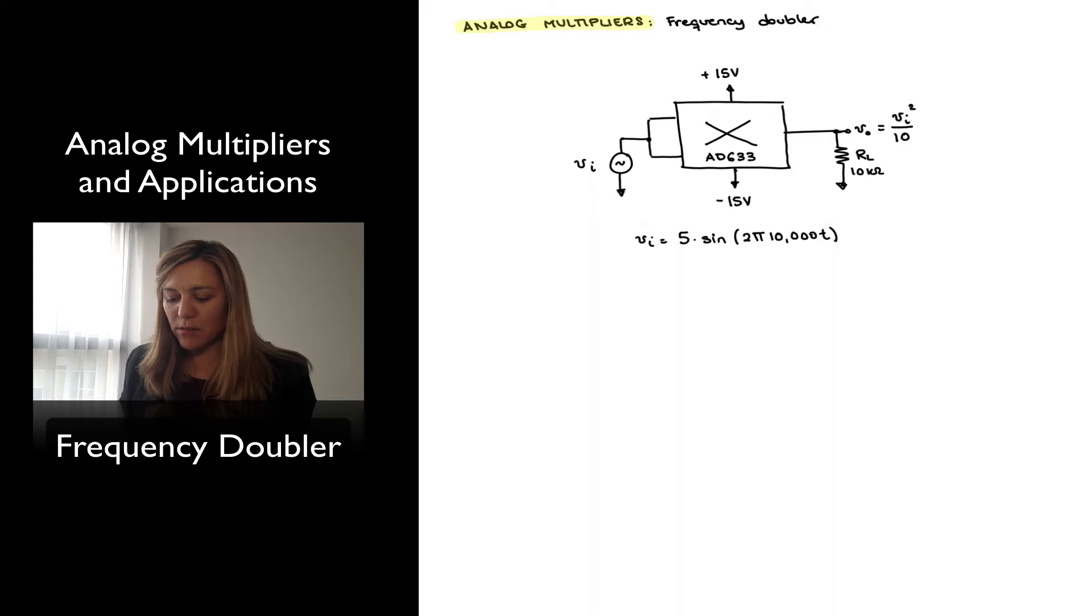So I'm applying an input signal equal to 5 times the sine of 2π·10,000t. So essentially an input signal which is a sinusoid of amplitude 5 and frequency 10 kHz.